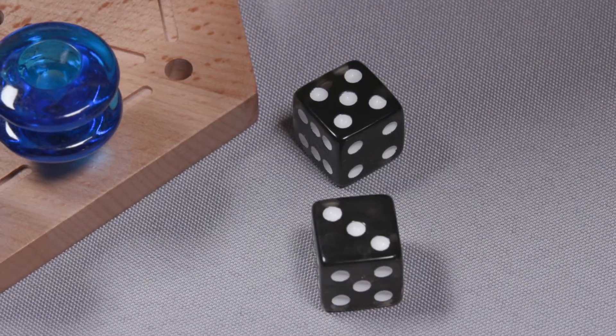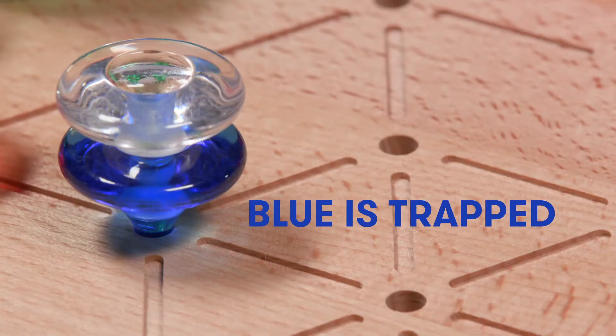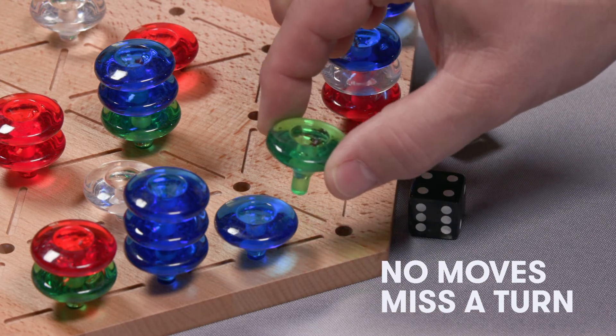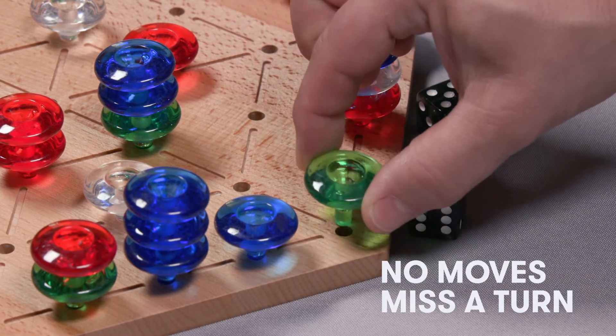You must move the full amount of both dice on your turn. Any of your pieces can be moved as long as they are not trapped or prevented by a barrier. In the rare instance that there is no way to complete both moves, you miss a turn.